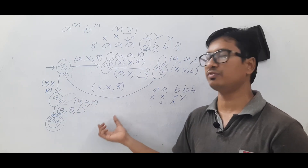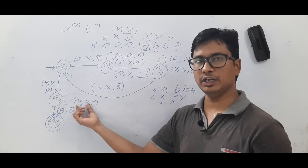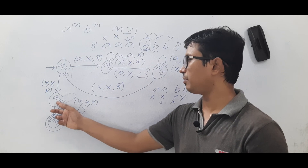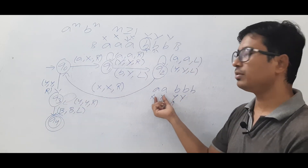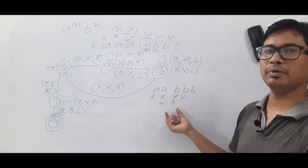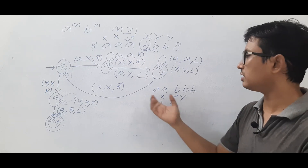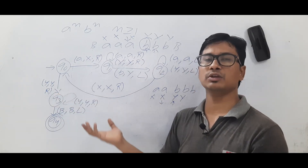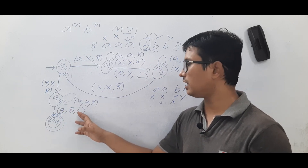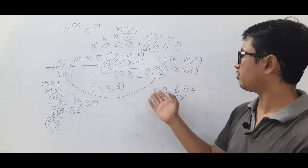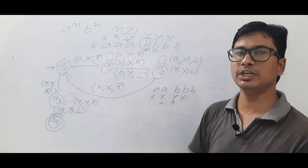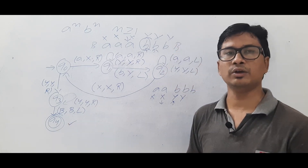In Q3, if we see a B instead of a blank, it means there are more B's than A's. No transition is defined for Q3 on B, so the machine enters a dead configuration — a reject state. Similarly, if the number of A's is more than B's, the machine also rejects. Only when A's exactly equal B's does the machine reach Q4 and accept.